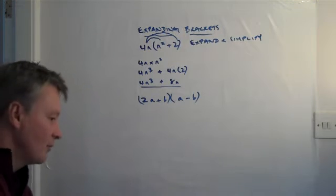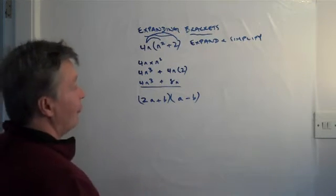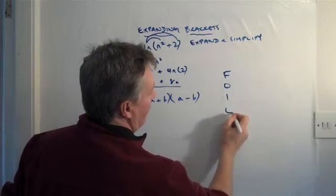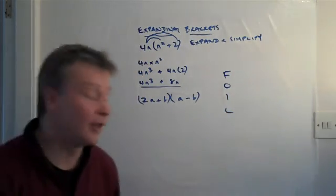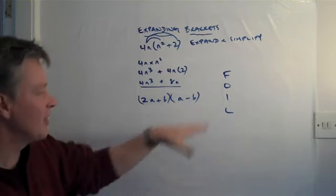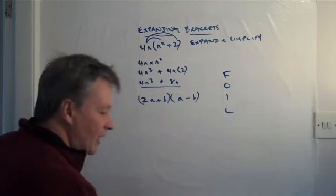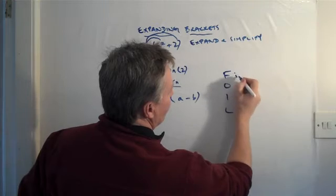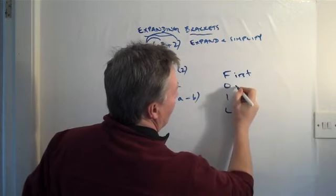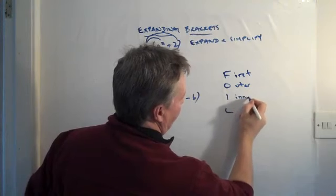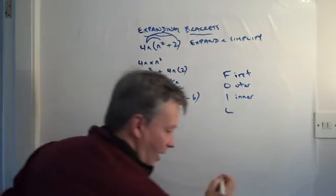Now, the way that's done is that we use something called FOIL, which is F-O-I-L. It's one of the ways of doing it. There is another way of doing it, which is a grid method. There's a couple of other different ways, but this is the most common way. And what it means is FOIL is first, then outer, then inner, and then last.